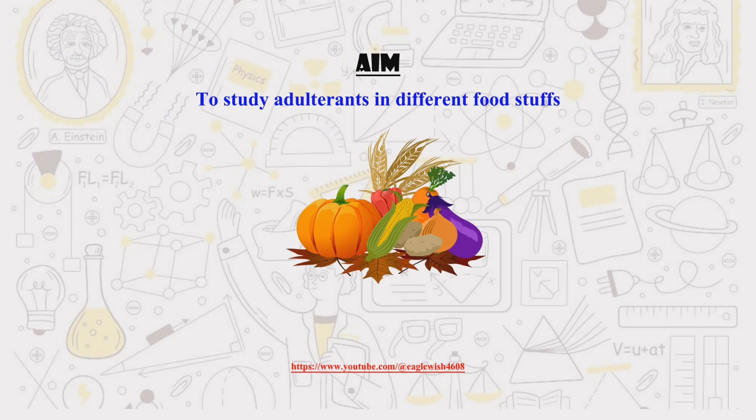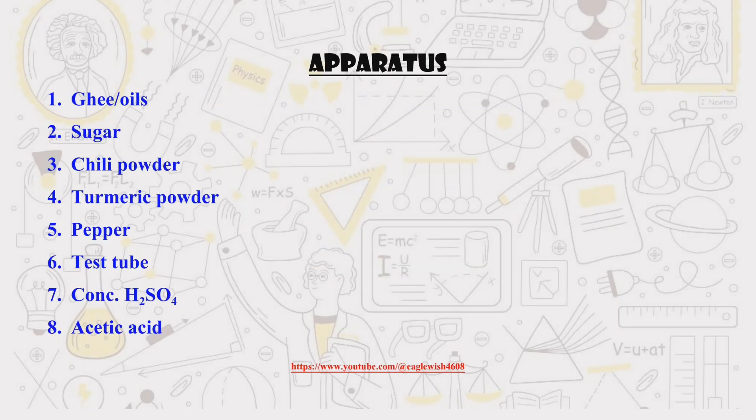The primary aim of this project is to identify and detect the presence of specific adulterants in various common food items. Next, we'll detail all the necessary requirements, listing the chemicals, equipment, and materials needed to conduct our adulteration tests.